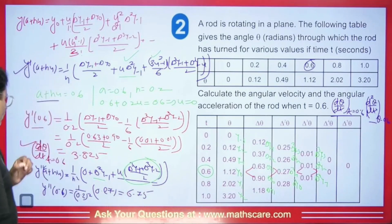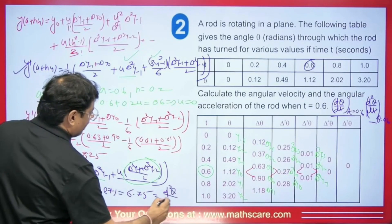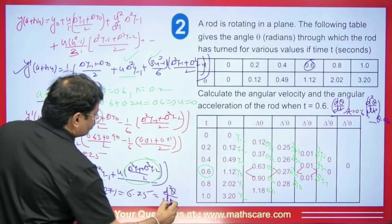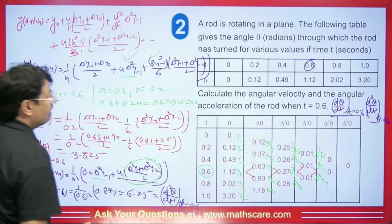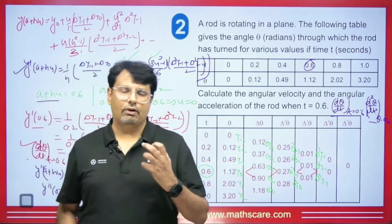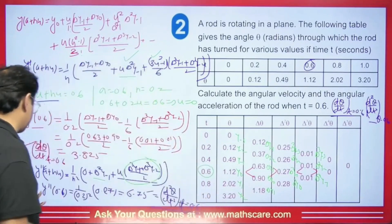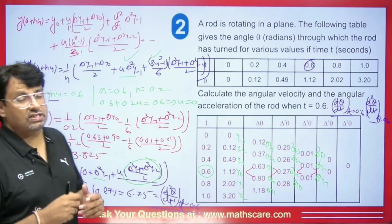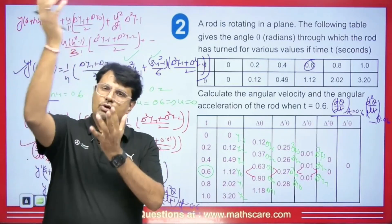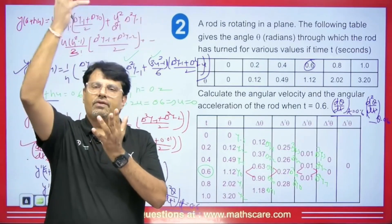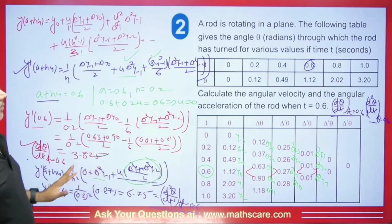The angular acceleration d²θ/dt² at t = 0.6 is 6.75. This is how we can calculate the angular velocity and angular acceleration using the concept of the Sterling formula. If a similar question is asked using Bessel, Gauss forward, or Gauss backward, you know those formulas — differentiate with respect to U and apply the same concept.